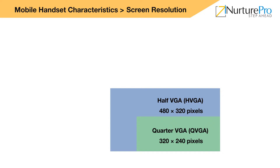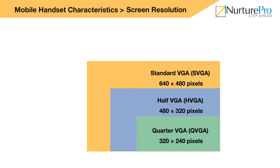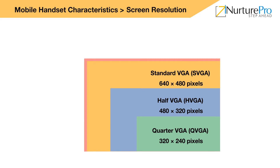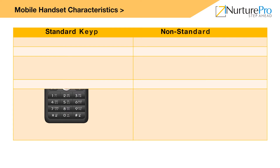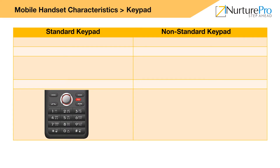Standard VGA: A VGA screen has a screen resolution of 640×480 pixels. Such a screen resolution is used in certain high-end smartphones. Wide VGA (WVGA): A WVGA screen has a screen resolution of 800×600 pixels. These screen resolutions are used mostly in devices such as tablets that have wider screens. Further, these screen resolutions are also used in certain large-screen smartphones.